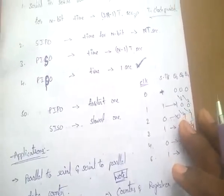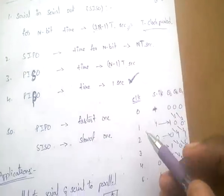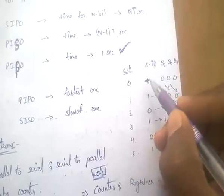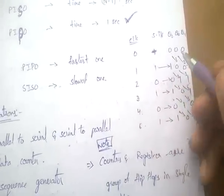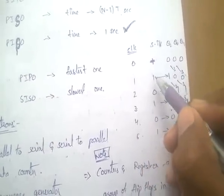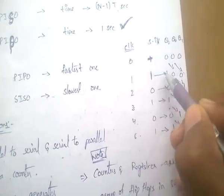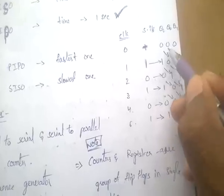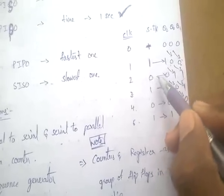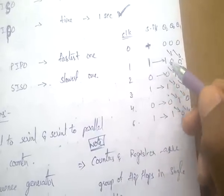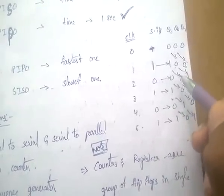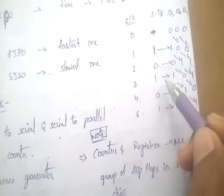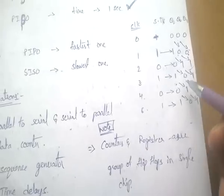SISO is the slowest at (2n−1)×T. For example with initial state 0 0 0: at clock pulse 1 we insert 1, giving output 1 0 0; at clock pulse 2 we insert 0, bits shift to give 0 1 0; at clock pulse 3 we insert 1, giving 1 0 1. This is how the shift register shifts one bit per clock pulse.